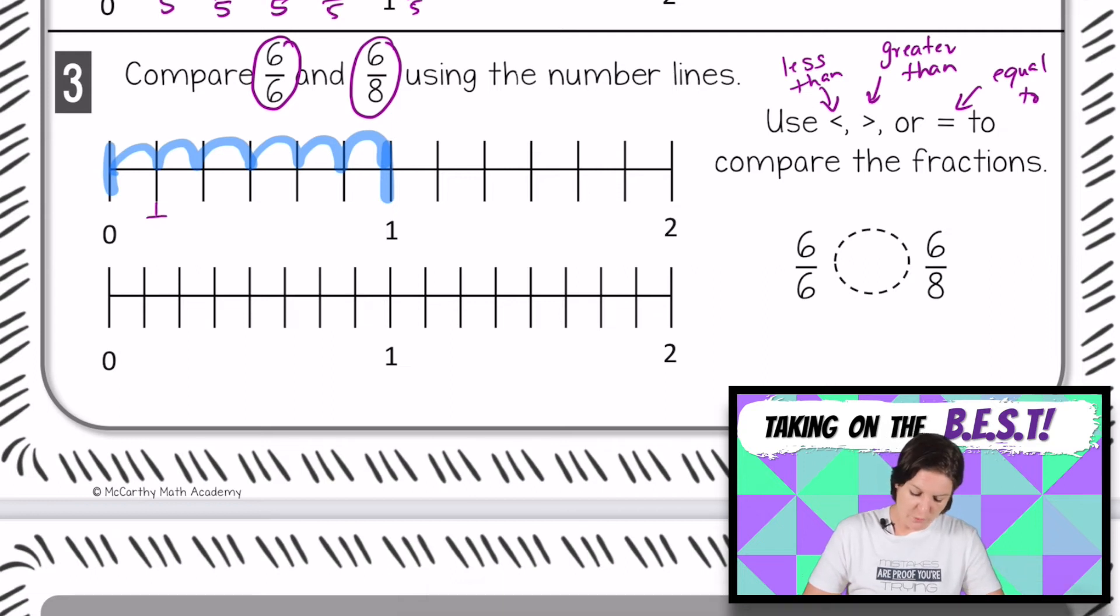So this would be 1/6, 2/6, 3/6, 4/6. Put the right denominator there, Miss McCarthy. 5/6, and then one would be 6/6. And that is where we can plot our point. Right there.